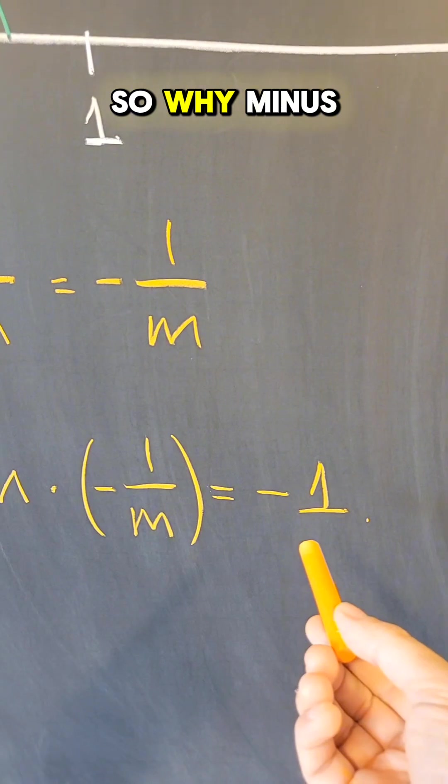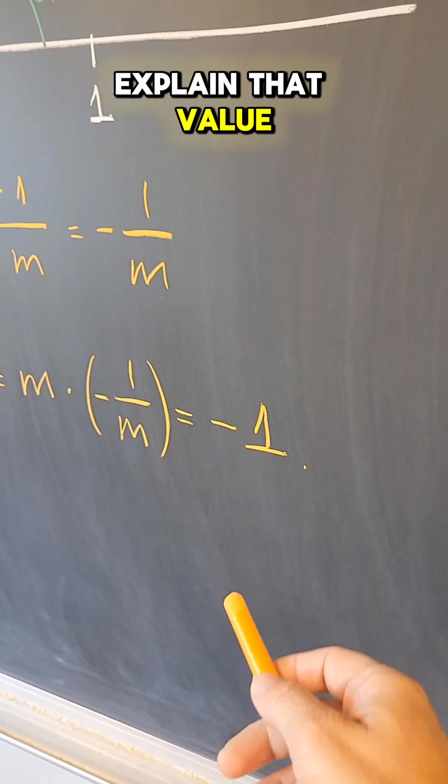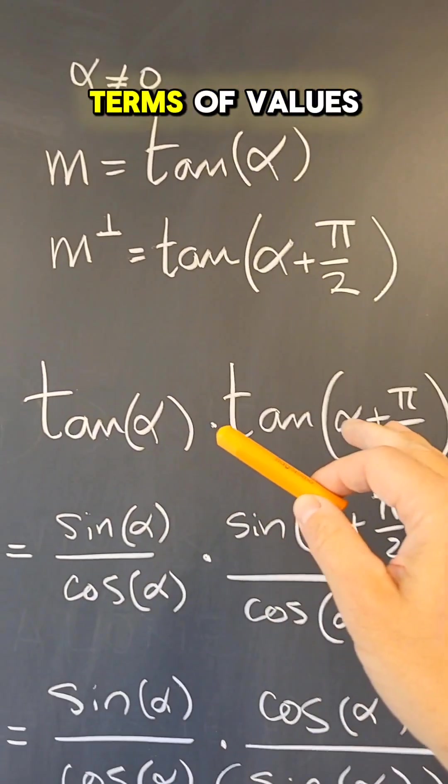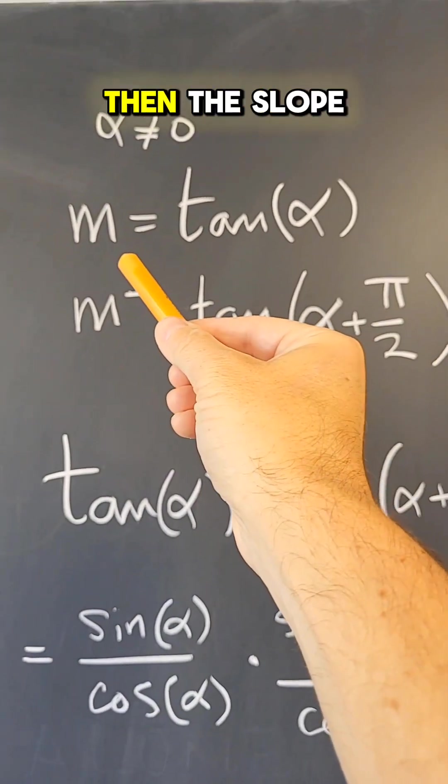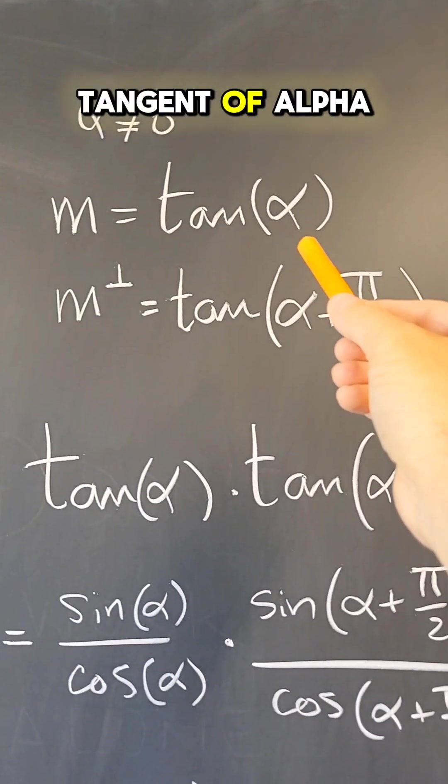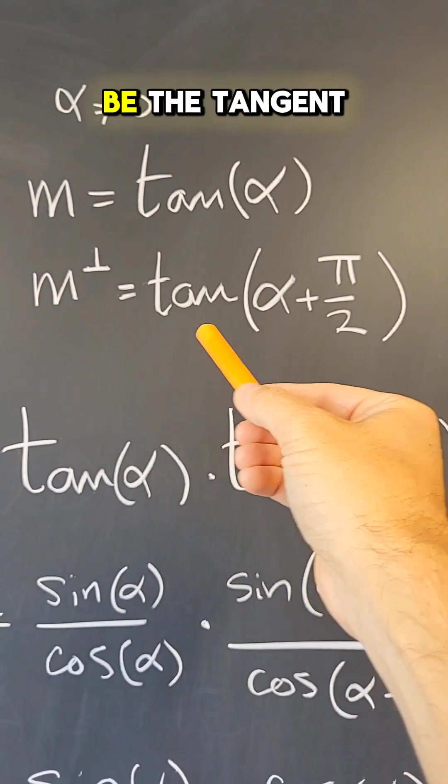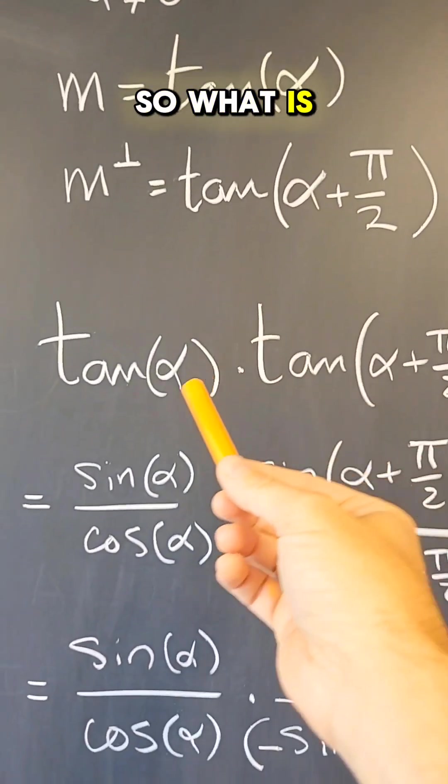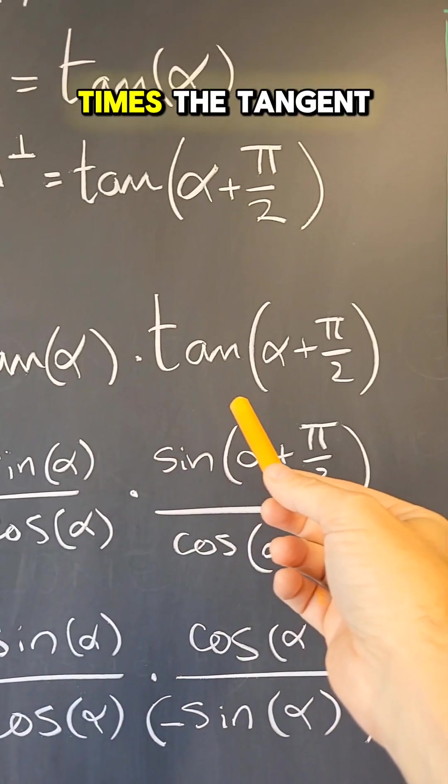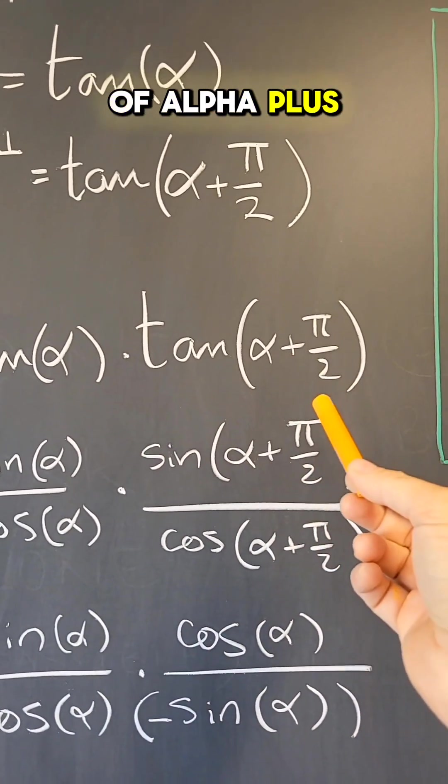So why minus one? And to explain that value, let me rephrase the problem in terms of values of the tangent. So alpha is a non-zero angle. Then the slope m is the tangent of alpha. The perpendicular will be the tangent of alpha plus pi over 2, plus 90 degrees. So what is the product of the tangent of alpha times the tangent of alpha plus pi over 2?